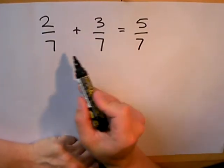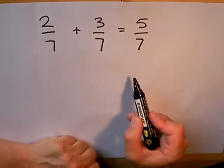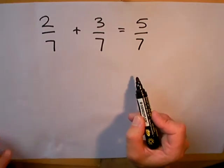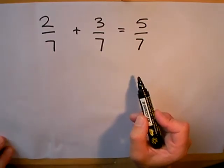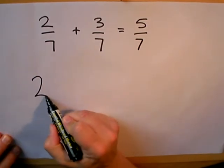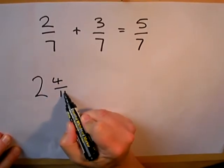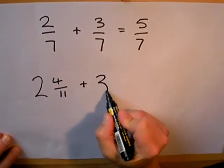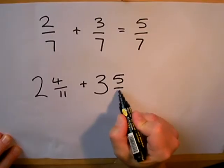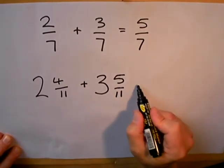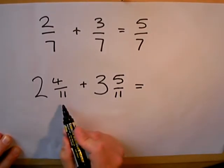Let's look at a different example: two whole ones and four elevenths add three whole ones and five elevenths. Again we have fractions where both numbers at the bottom are the same, so we don't have to mess around changing anything.